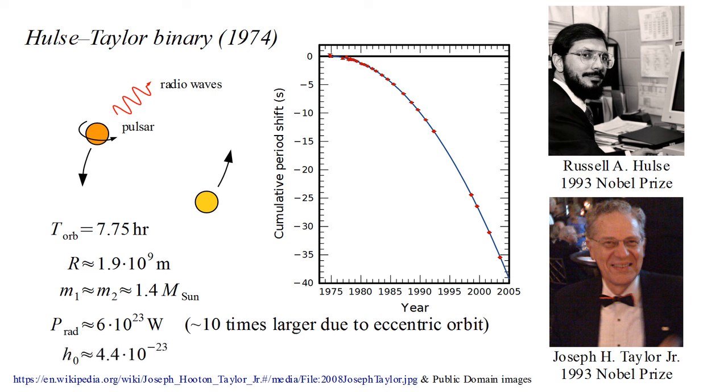The Hulse-Taylor binary is about 21,000 light years away. The amplitude of its gravitational waves at Earth are predicted to be around ten to the minus twenty-two or so.